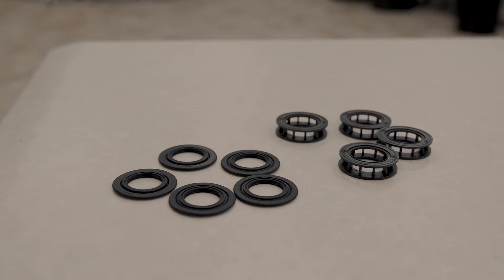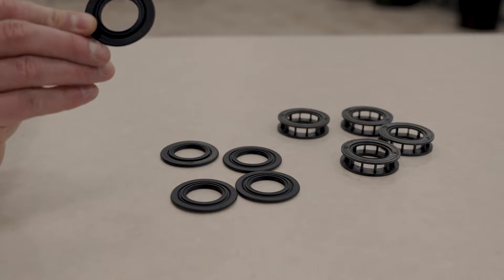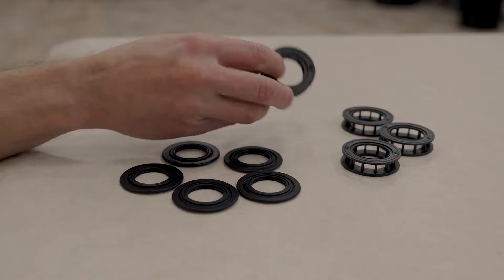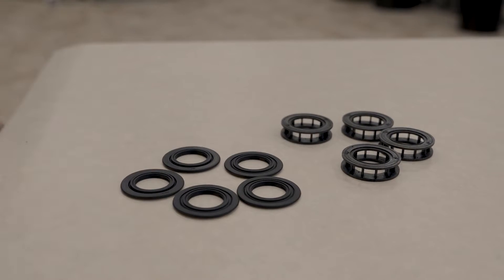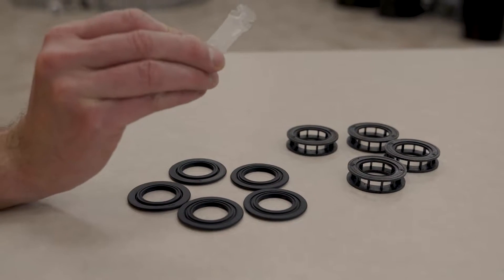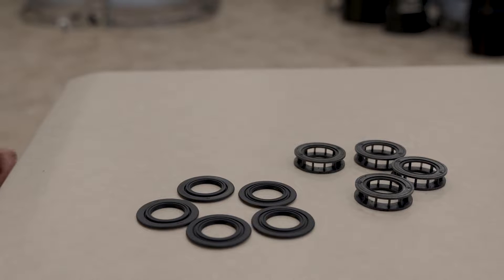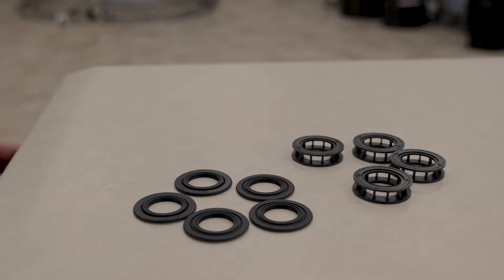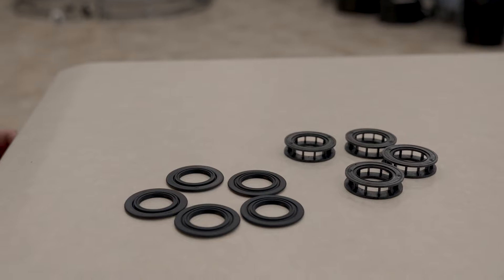When installing a new seal and spacer kit, it's going to come with five rubber seals and four plastic spacers. It's also going to come with a small tube of food grade silicone lubricant. If you're using a seal kit that didn't come with the lubricant, any food grade silicone will work well. Just make sure that you're not using anything petroleum based.